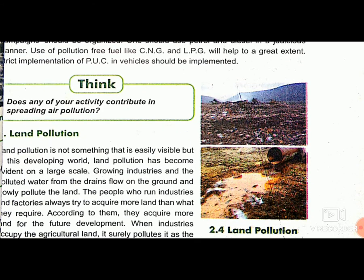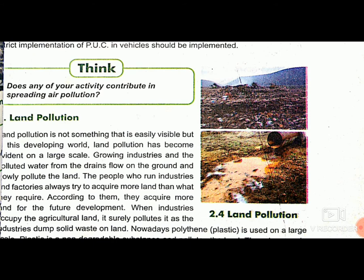Land pollution cannot be seen easily but in this developing world it causes a great effect on our life. We are dumping industrial waste, social waste and polluting water on the land, which decreases the quality of that area. Growing industries and polluted water from drains flow on the ground and pollute the land, which affects its quality. People who run industries and factories always try to acquire more land than what they require, claiming it for future development. When industries occupy agricultural land, it surely pollutes it.